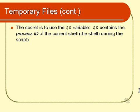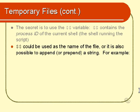The secret is to use the $$ variable. And $$ is another one of those clever little variables that we've got at our disposal, like $?, $#, $* and so forth. This contains the process ID of the current shell, which in this case would be the shell that's running the script. That completely solves the problem because you can use $$ as the name of the temporary file, or at least part of the name of the temporary file. You can append a bit of text on the end of the $$ or put a bit before it if you like as well.